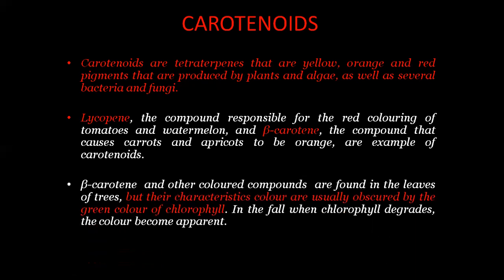Beta-carotene and other colored compounds are found in the leaves of trees, but we usually see leaves as green because the characteristic orange, red, or yellow colors are obscured by the green color of chlorophyll. When a leaf falls, the chlorophyll degrades and the carotenoid colors become apparent.